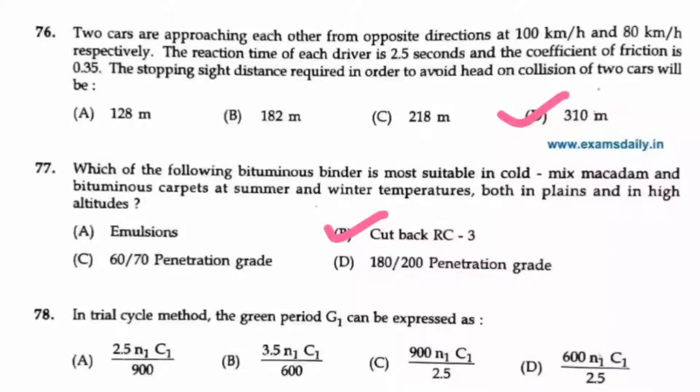Question number 78. In trial cycle method, the green period G1 can be expressed as 2.5 N1 C1 by 900. Option A is the answer.